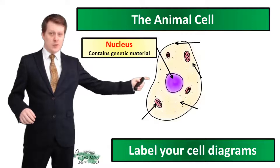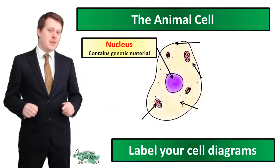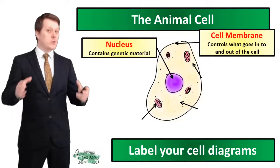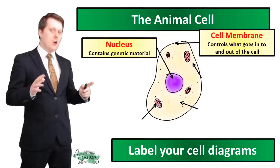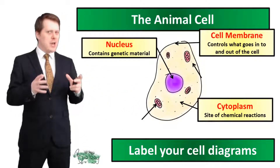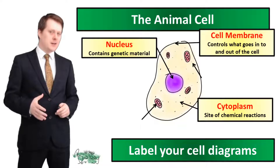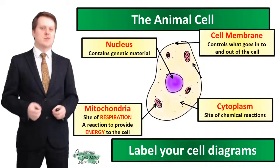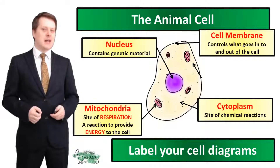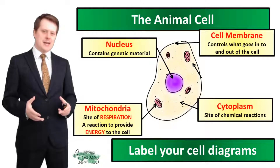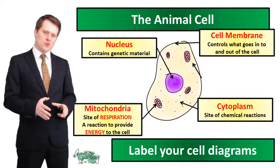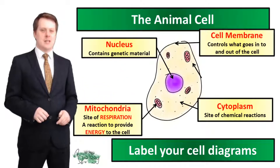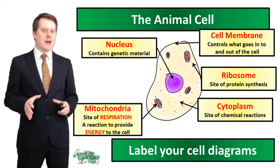Right in the middle of our cell diagram we've got the nucleus, and the nucleus contains genetic material called DNA. Around the outside of the cell we've got the cell membrane, and the cell membrane controls what goes into and out of the cell. On the inside of the cell we've got the cytoplasm, which is a jelly-like substance and it's where a lot of the chemical reactions of the cell occur. And then we have these organelles which are the mitochondria — these are the sites of a reaction called respiration, which is a reaction that provides the cell with energy. Avoid saying that they make or create energy because energy can't be created or destroyed, so either say it provides energy or it releases energy to the cell. And then we've got these tiny little dots in our cell called the ribosomes, and these are the site of protein synthesis.